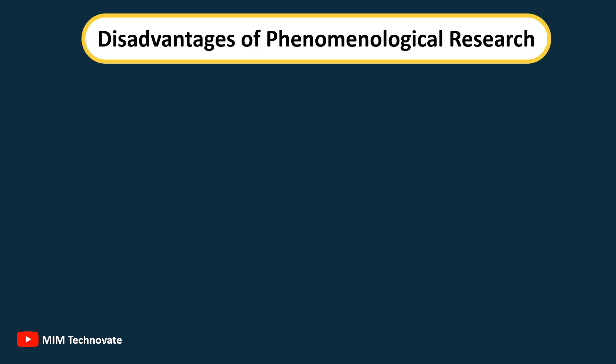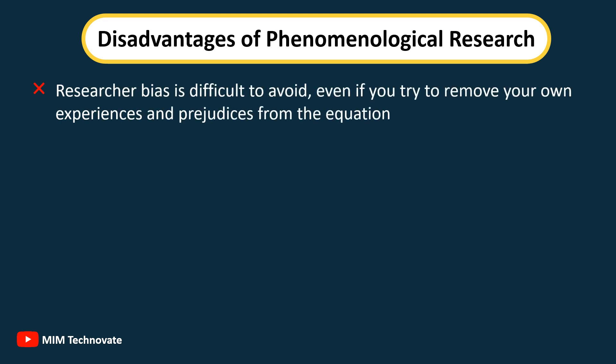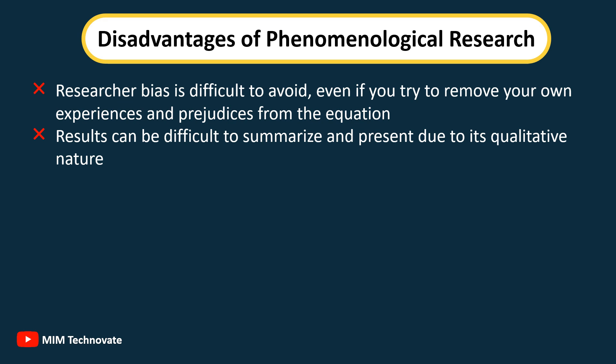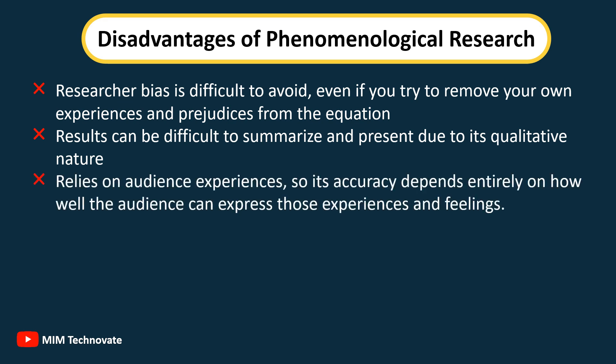Disadvantages of phenomenological research: researcher bias is difficult to avoid, even if you try to remove your own experiences and prejudices from the equation, and bias can contaminate the entire outcome. The results can be difficult to summarize and present due to its qualitative nature, and conclusions typically need to include qualifiers and cautions. It relies on audience experiences, so its accuracy depends entirely on how well the audience can express those experiences and feelings.